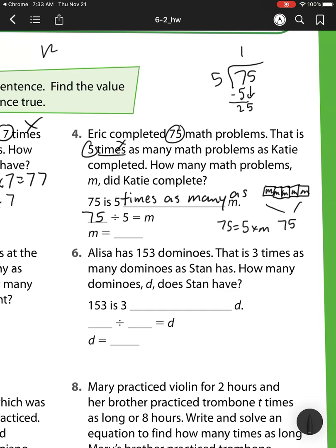5 goes into 25, 5 times. Multiply. 5 times 5 is 25. Subtract. Check. 0 is less than 5. Bring down. There's nothing to bring down. So m is equal to 15.